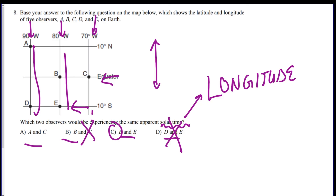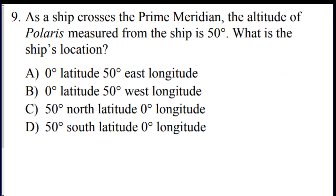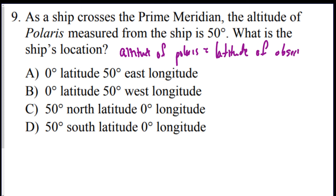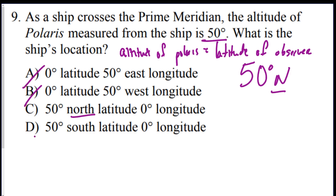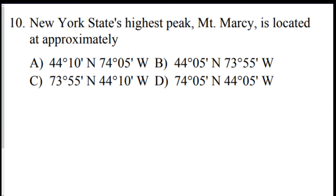Question: as a ship crosses the Prime Meridian, the altitude of Polaris is measured at 50 degrees. What is the ship's location? The key fact: the altitude of Polaris equals the latitude of the observer. So 50 degrees altitude means 50 degrees north latitude — it cannot be south because Polaris is not visible in the southern hemisphere. The Prime Meridian is zero degrees longitude, so the answer is C.